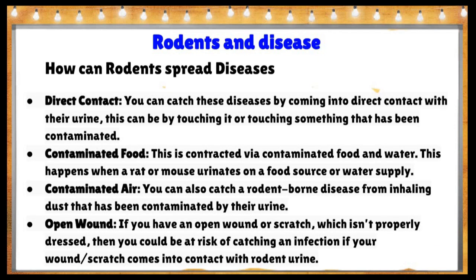Rodents spread diseases through several routes. Through direct contact: you can catch diseases by coming into direct contact with their urine — by touching it or touching something contaminated. Through contaminated food and water: this happens when a rat or mouse urinates on a food or water source.